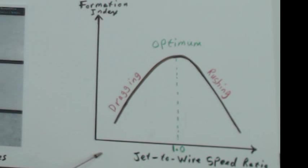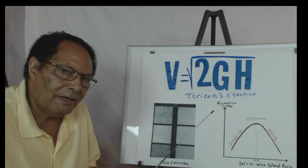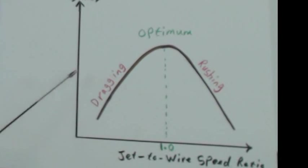It's formation index or sheet strength properties, fiber orientation, MD to CD ratio and so on. When you talk about sheet formation development, ideally you like to see the jet is equal to the wire speed, what we call unity. That's the optimum condition.